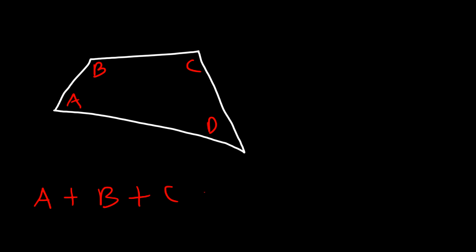In this video we're going to talk about quadrilaterals. A quadrilateral is simply a four-sided figure and it turns out that the interior angles of a four-sided figure adds up to 360. So in this example angle A plus angle B plus angle C plus angle D adds up to 360 degrees.